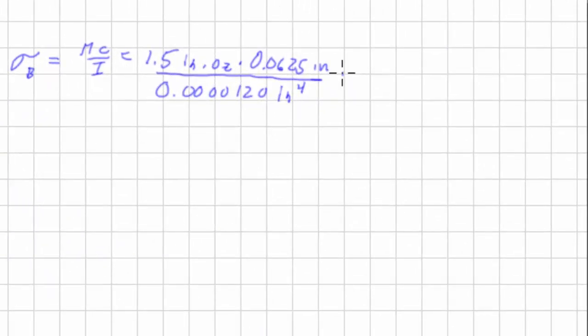And then since all of our material properties are in pounds, we're going to have to convert this from ounces to pounds. So we multiply it by 1 pound for 16 ounces. Then we can do a bunch of cancellation. Ounces here, ounces here. We've got 2 inches up here, inch times inch, and then inches to the fourth down here. So we cancel out that to make that squared. So we'll end up with pounds per square inch, which is what we wanted. And that's 488 psi.